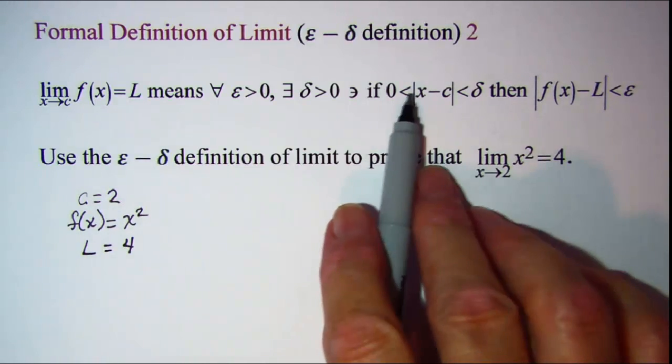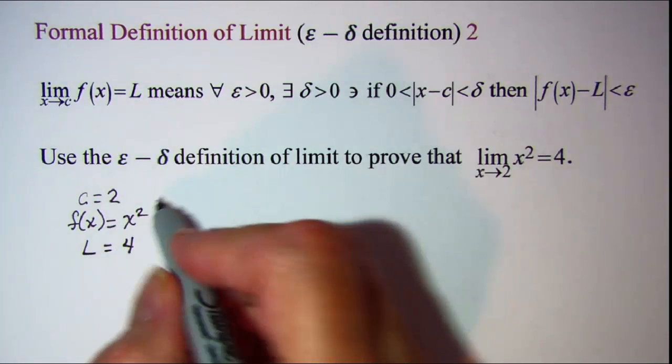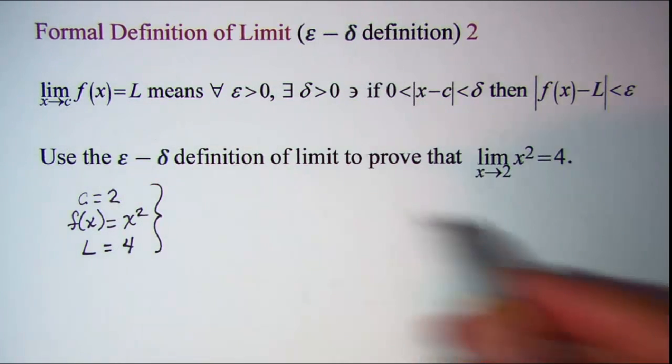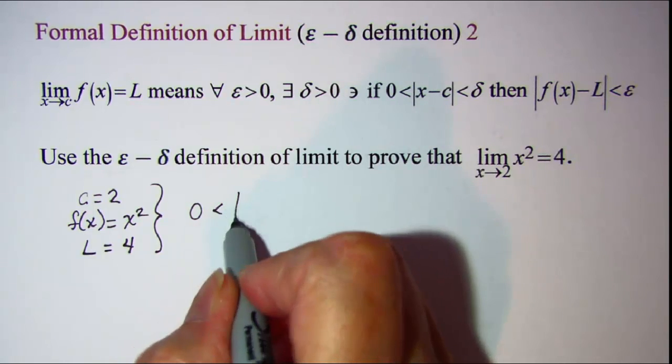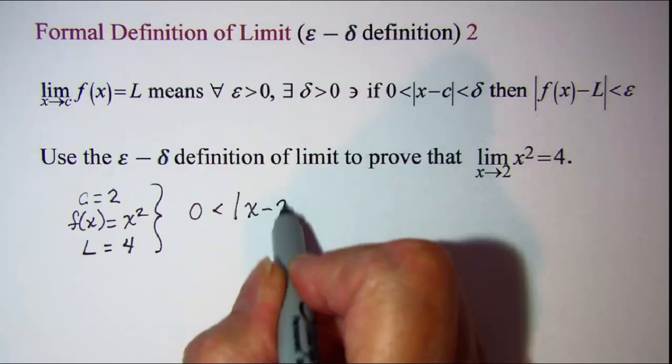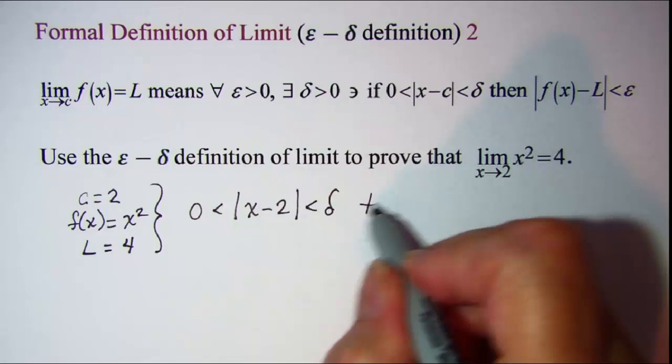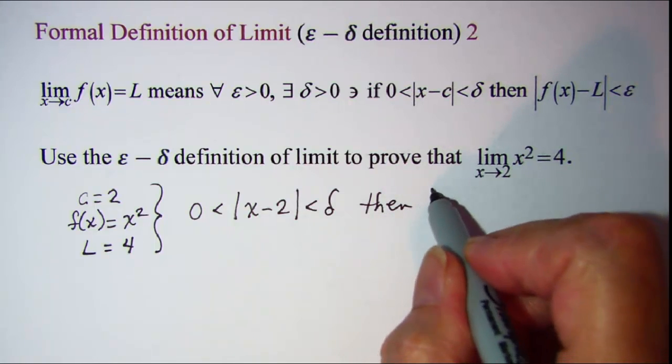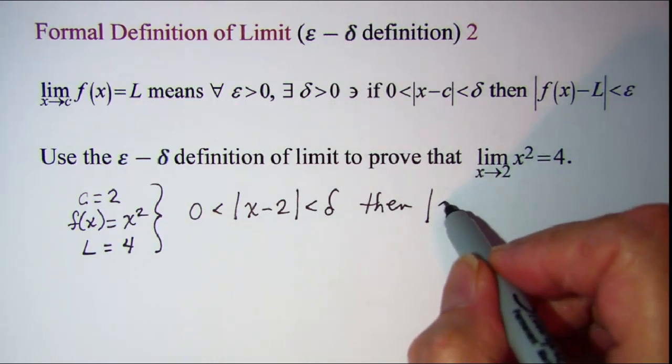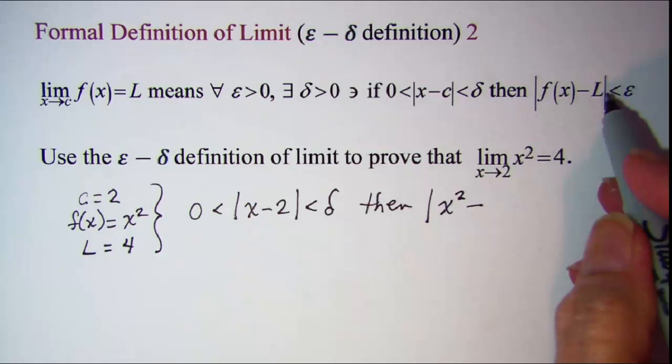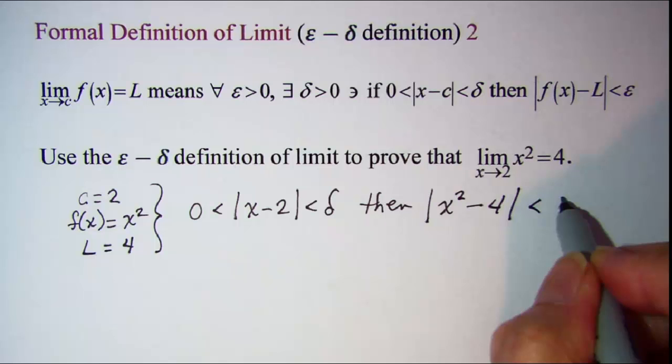So let me write this part of the definition using these values that I know. We have 0 is less than absolute value of x minus 2 is less than delta, then absolute value, and then f of x we know is x squared minus L, which is 4, is less than epsilon.